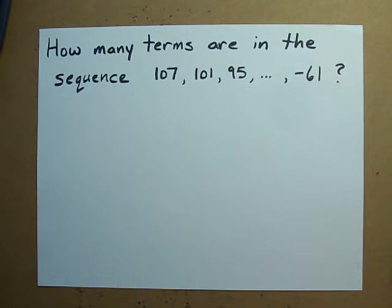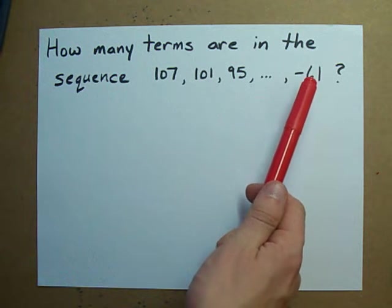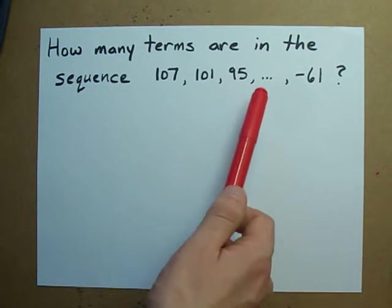How many terms are in a sequence if you're given the first few and the last term? You need to know how many are in between, because I left a bunch out, those jerks.